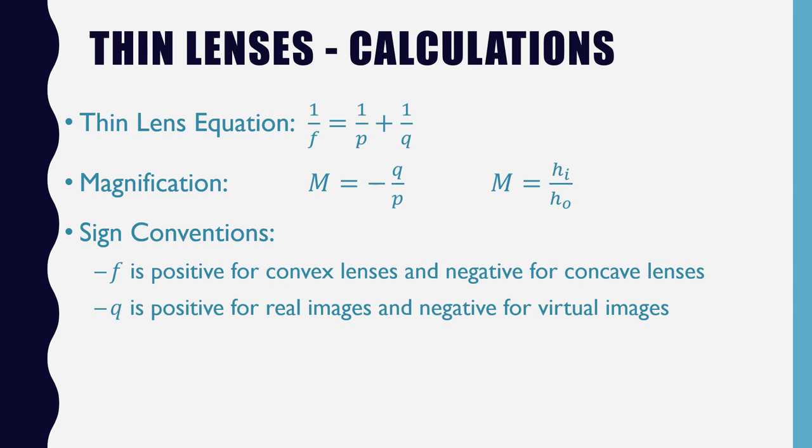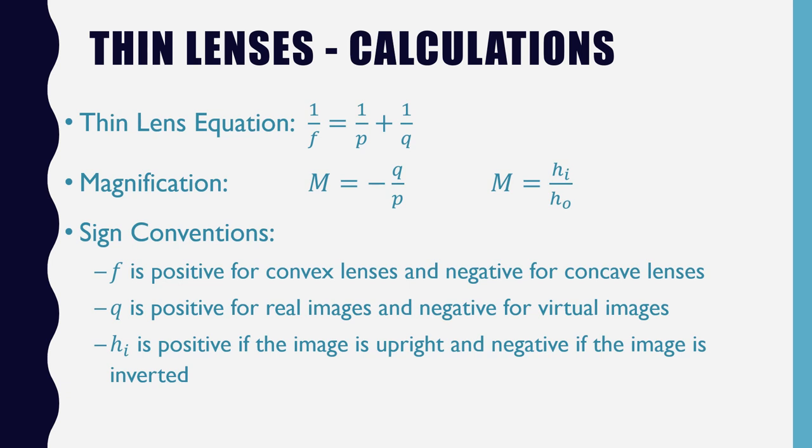Just like with mirrors, the image distance is positive for real images and negative for virtual images. And again, just like with mirrors, the image distance is positive if the image is upright and negative if the image is inverted.